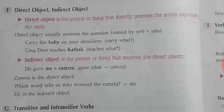Now, direct object and indirect object. The direct object is the person or thing that directly receives the action expressed by the verb. The direct object usually answers the question formed by the verb plus 'what'. For example: 'Carry the baby on your shoulders' — carry what? The baby. 'Umma Devi teaches Kathak' — teaches what? Kathak.